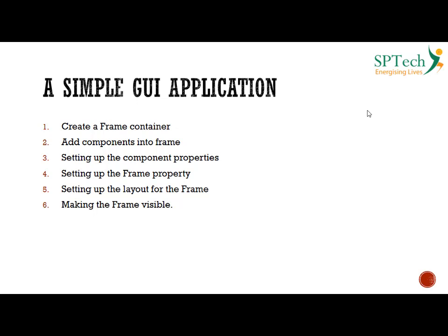The steps almost remain the same. I have taught you the six steps for creating any GUI application, and it is no different for Swing as well. The first thing is you have to create a frame, which we call as a container or a placeholder. Once the placeholder is existing, you have to start adding components into the frame. Then you have to set up the component properties — the component could be a button, a text box, a list, whatever you use. And finally, you have to set up the property of the frame, set the layout of the frame, and make the frame visible. These six steps were also the same for your AWT framework.